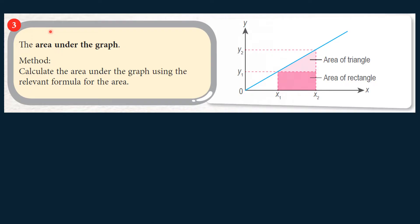The third use of the graph is to calculate the quantity represented by the area under the graph. The area under the graph means the area between the graph line and the x-axis — this shaded area is the area under the graph. The quantity represented by the area under the graph is equal to the product of the two axes. For example, let's say we draw a graph of force applied on a spring against the extension of the spring.